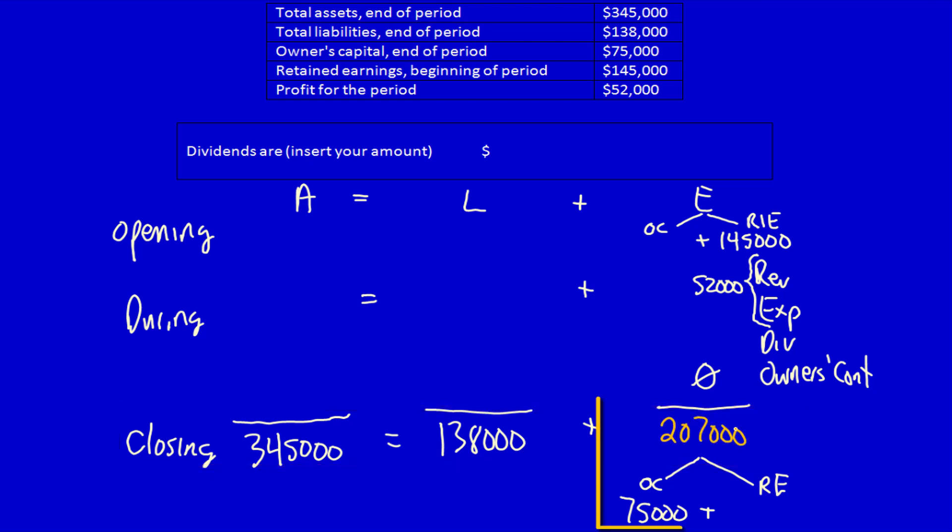Now we know that $207,000 equals $75,000 plus x. We have to solve for x, which is $207,000 minus $75,000, equal to $132,000.